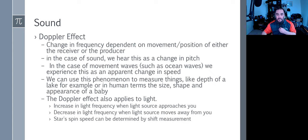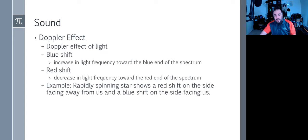The Doppler effect is a change in frequency dependent upon movement and position of either the receiver or producer. In the case of sound, we hear this as a change in pitch. We can use this phenomenon to measure things like the depth of a lake or in human terms, the size, shape, and appearance of a baby using Doppler in ultrasound. The Doppler also applies to light. Increasing in light frequency when light sources approach you, decrease in frequency when light moves away from you. Star spin and speed can be determined by shift in movement when we observe them in the sky. There's blue shift, an increase in frequency towards the blue end of the spectrum, and red shift, a decrease towards the red end. A rapidly spinning star shows red shift on the side facing away from us and blue shift on the side facing us.